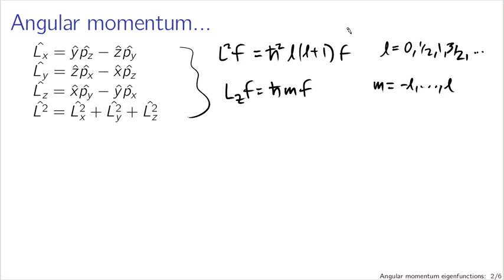When we were working with the one-dimensional quantum harmonic oscillator, we were able to derive the ground state by knowing that the lowering operator acting on the ground state gave us zero. That was a differential equation we could work with since we knew differential forms for the lowering operator. We can do the same thing with the angular momentum operators, but in this case it's more worthwhile to think more generally.